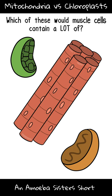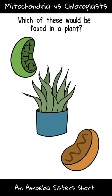So quick quiz: which of these would muscle cells contain a lot of? Mitochondria. Which of these would be found in a plant? Tricky — both.